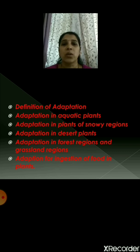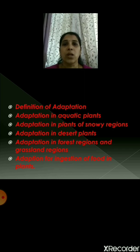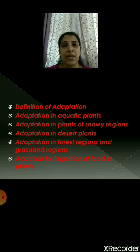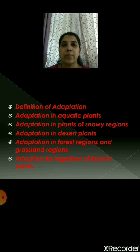Then we saw about the adaptation in forest regions and grassland regions. In the forest regions, there are a variety of plants — trees, herbs, and bushes — which all compete among themselves for sunlight. The climbers and vines grow to a greater height with the help of the support of a plant. In grassland regions, there are diverse types of bushes and grasses. These grasses have fibrous roots and because of this, they can prevent soil erosion.